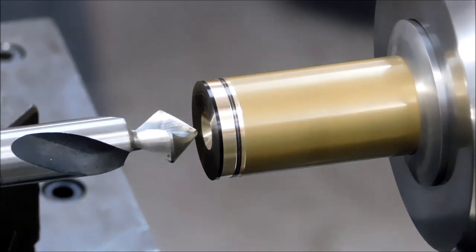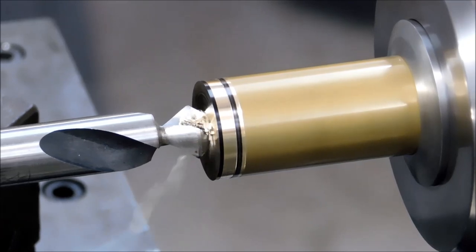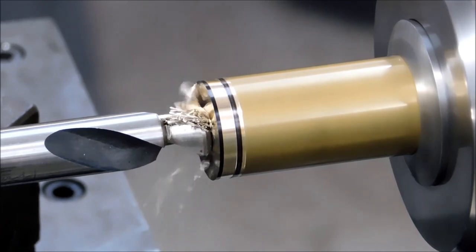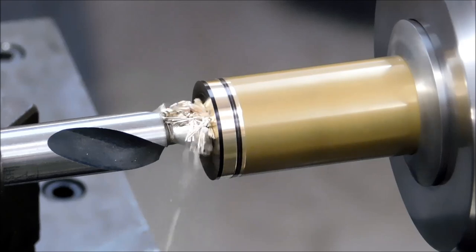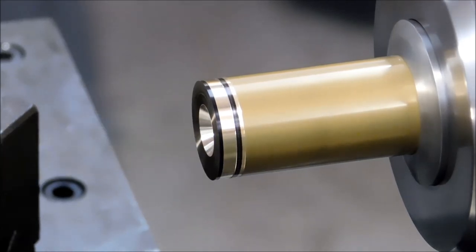Alright, we have a 90-degree spotting drill here and the relief that you see is so that I can go deeper than the diameter without rubbing on the sides of the drill. It then acts like a boring bar, but I'm only going to go to the full 0.500 diameter size.